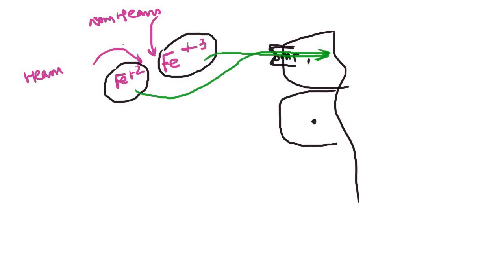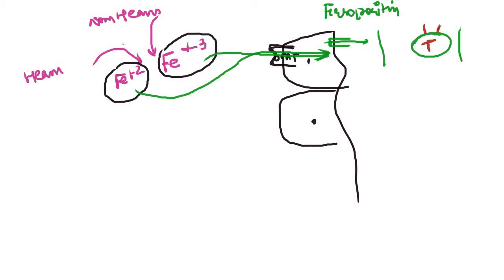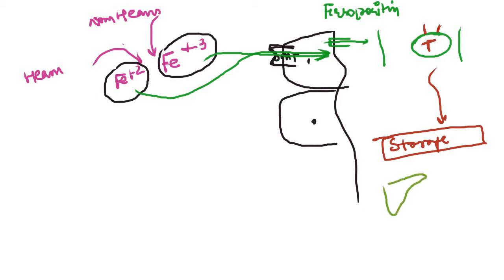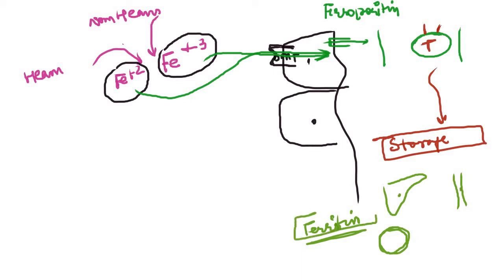On the basal side we have a highly regulated channel called ferroportin, and through this channel iron enters into the blood. In the blood, iron finds a special protein called transferrin. The iron binds to transferrin and is transported across the blood to its storage sites. The storage sites of iron are the liver and the bone marrow, where iron is stored in macrophages complexed to a protein called ferritin. So iron is stored as ferritin both in the liver and in the bone marrow.